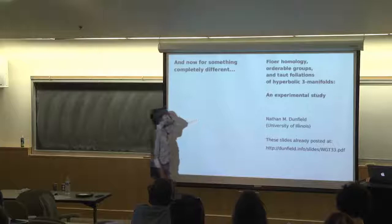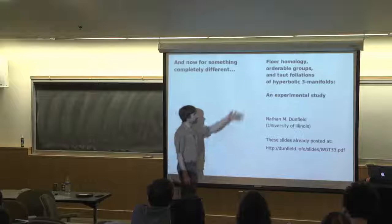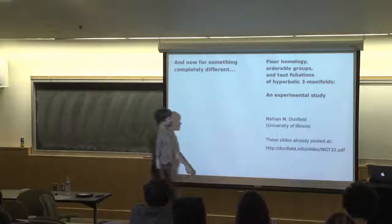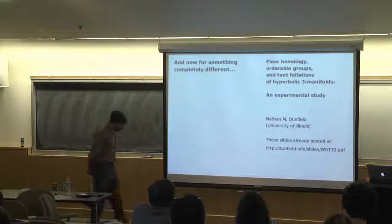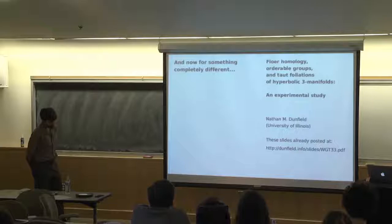Today I want to talk about a conjecture — there'll be certainly no proofs, no theorems really — and it relates three things, none of which have made an appearance in this conference so far. I'll spend the first half hour just telling you what these three things are: Floer homology, orderable groups, and taut foliations. I'm going to tell you about a conjecture formed over the past ten years which, just to be upfront, I don't believe. This is really just an account of my failure to disprove this conjecture.